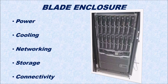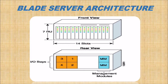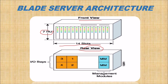These blade enclosures have superior power, cooling, networking, high storage, and of course great connectivity. This is a view of your architecture — this is the front view and this is the back or rear view of a blade server. These are 14 slots, with the height shown, one blade visible, the management modules, and the input/output bays — this is how a blade server looks.